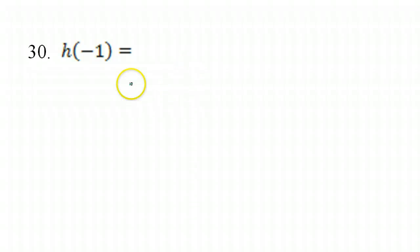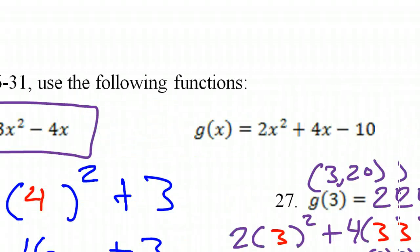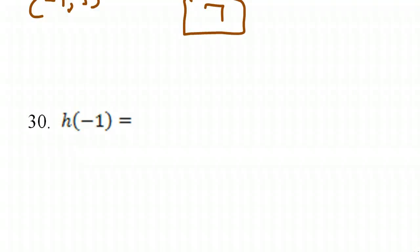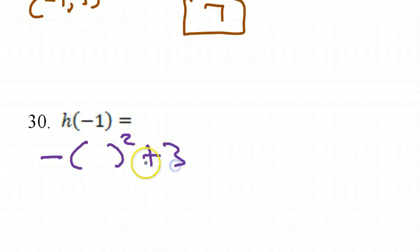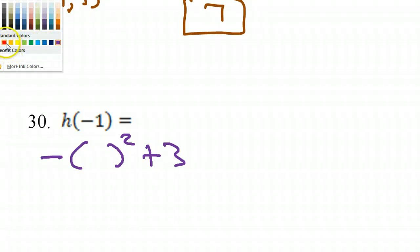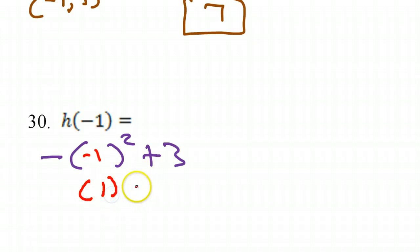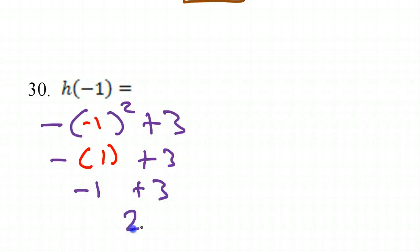Number 30. We're using function H. Function H was negative x squared plus 3. So I'm going to do negative parentheses squared plus 3. If I'm going to evaluate this at negative 1, I've got to square it first and then apply the negative sign. If I square this first, I get positive 1. I've still got this negative sign and the plus 3. So this is just negative 1 plus 3, which is 2.